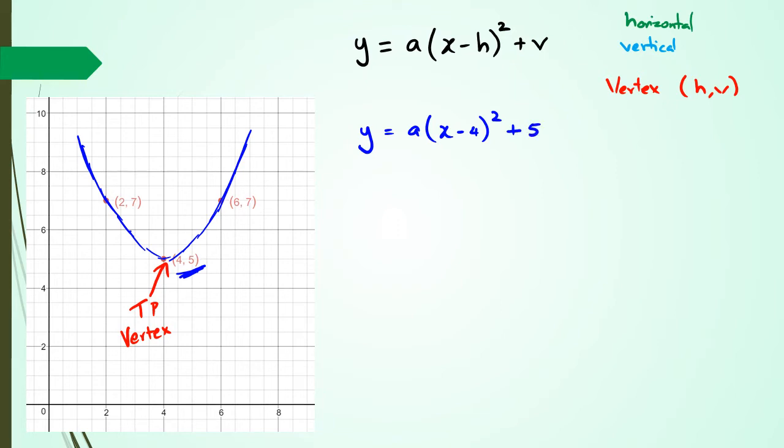And another thing that you need to realize is that the vertex in this form can be written as h and v, like that. So if you look at the example on my left here, you will notice that the vertex is at 4, 5. So that means we can replace h and v straight away with 4, 5. So this equation now is going to look like y equals a multiplied by x minus 4 squared plus 5.